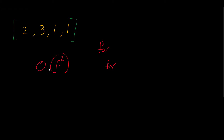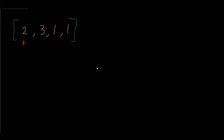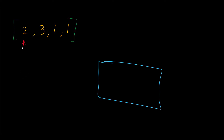Now let's look at how we can optimize it. For the optimization we don't want to use two pointers — we only want to use one and move only to the right. Let's imagine we have a big box, and this box will contain the numbers in the array. At each number we ask: does this number appear in the box? If the answer is no, we add it. The box is empty, so is 2 in the box? No, so we add it.